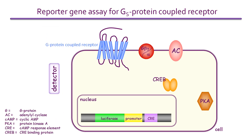This cartoon illustrates a typical cell assay employing a reporter gene to detect the activation of a G-protein coupled receptor. In this case, when a ligand binds to and activates the receptor, the G-S protein is stimulated, leading to activation of adenylate cyclase and the production of the second messenger cyclic AMP.